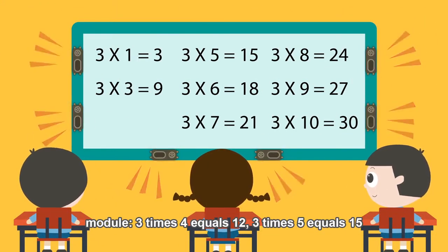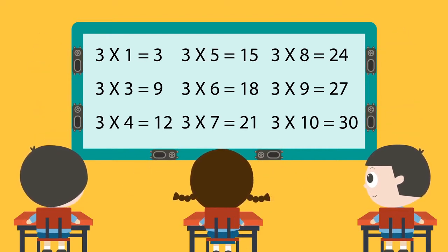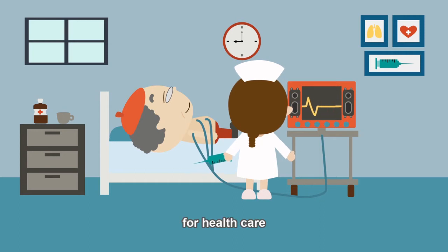3 times 4 equals 12, 3 times 5 equals 15. For healthcare.